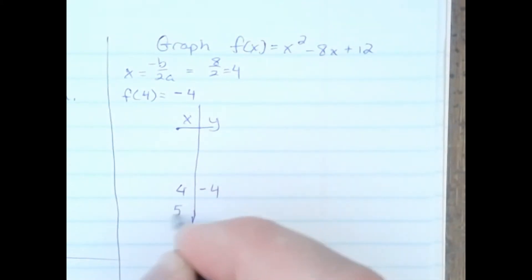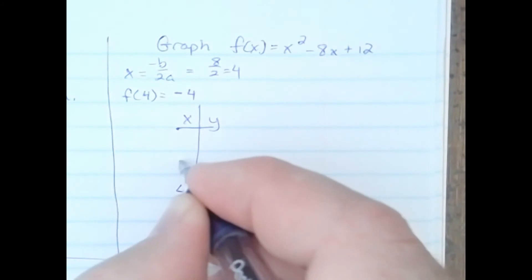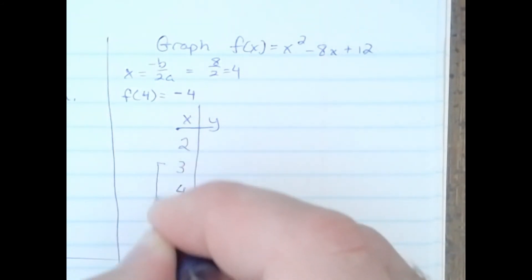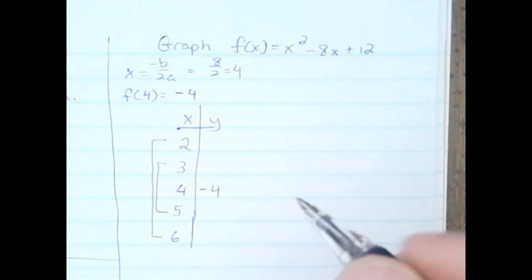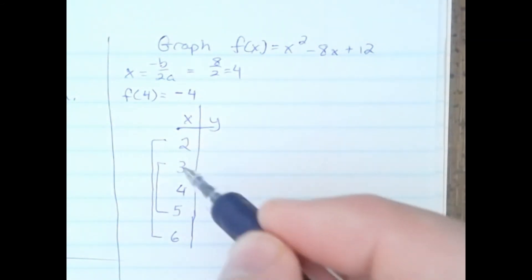4, 5, and 6, and I'll go the other way, 3 and 2. This maintains the symmetry and minimizes the amount of work I need to do. We're going to plug in 3 and 2 only, because once we do,